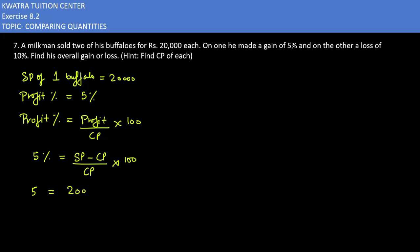SP is 20,000 minus CP over CP times 100. Now we need to find the CP value. If you don't understand, you can take CP as x. So 20,000 minus x over x into 100.